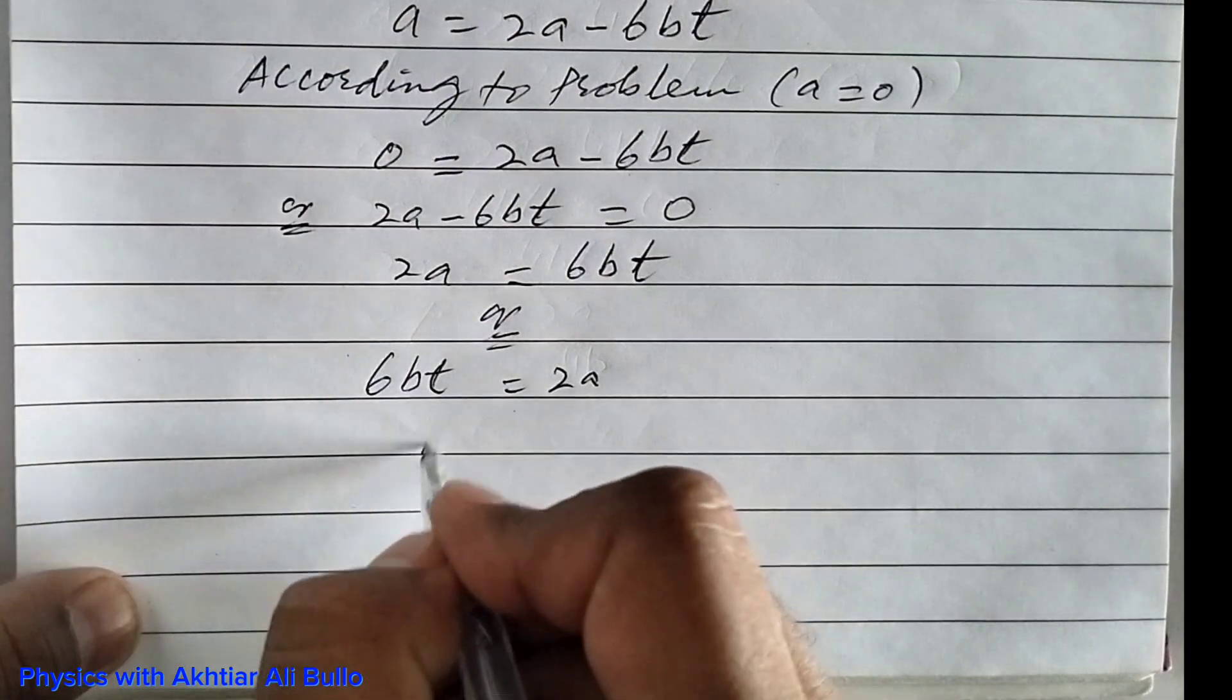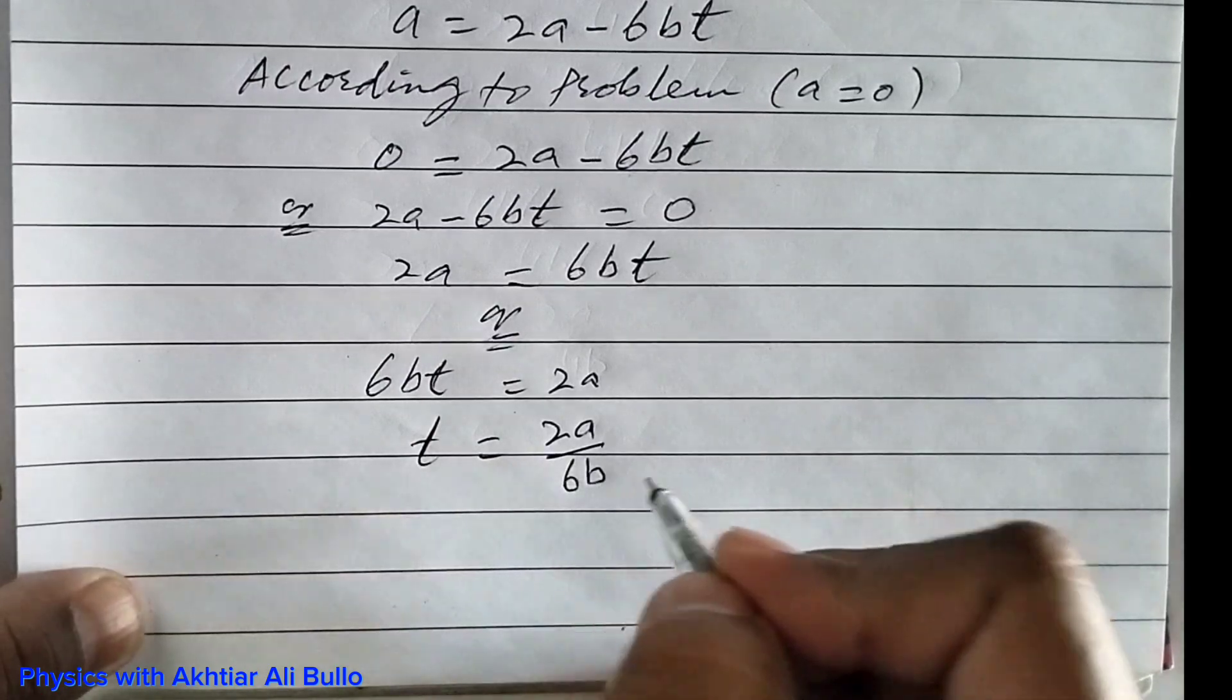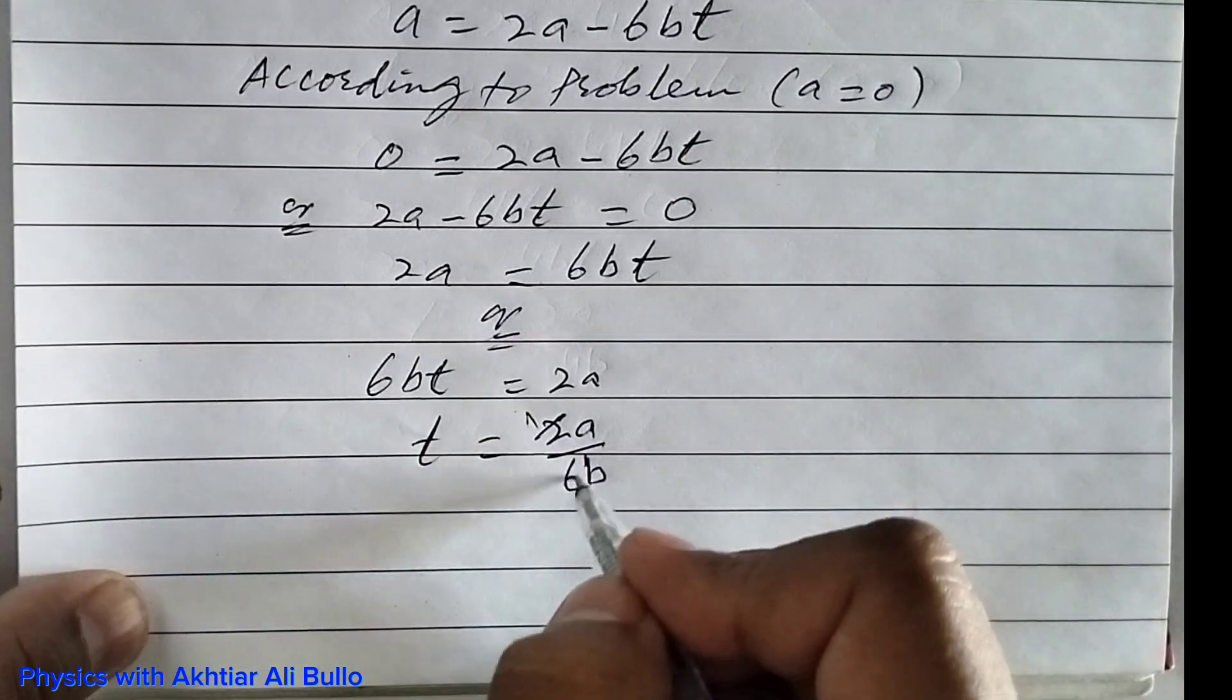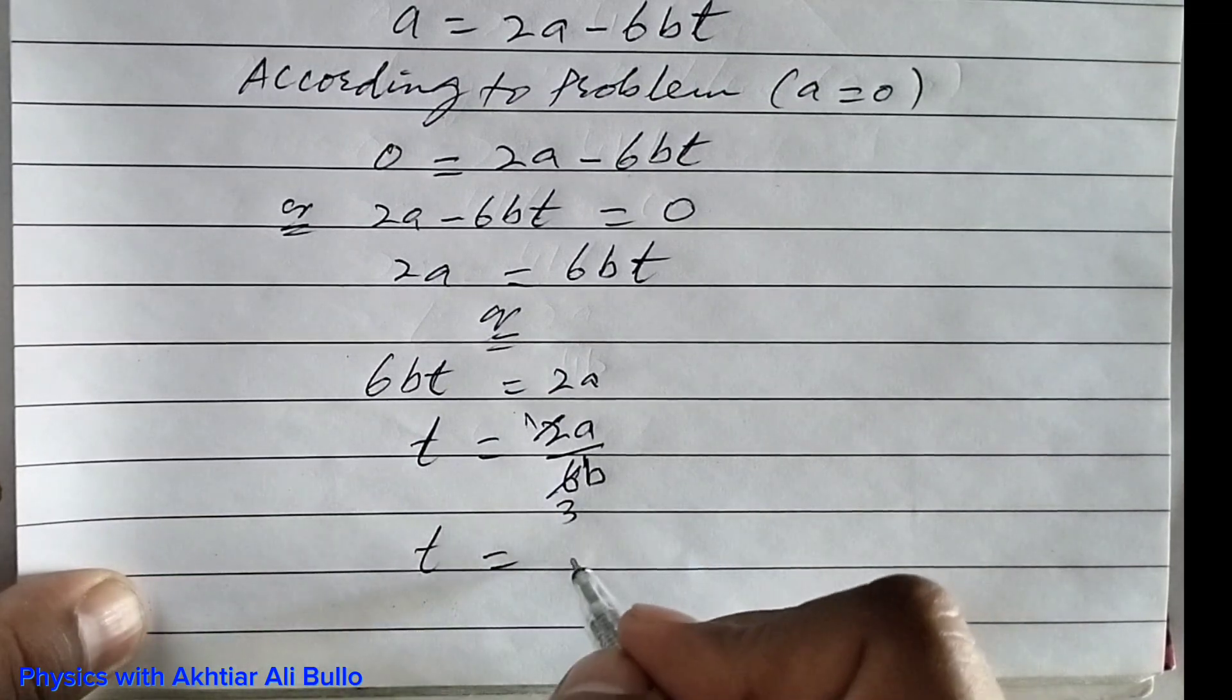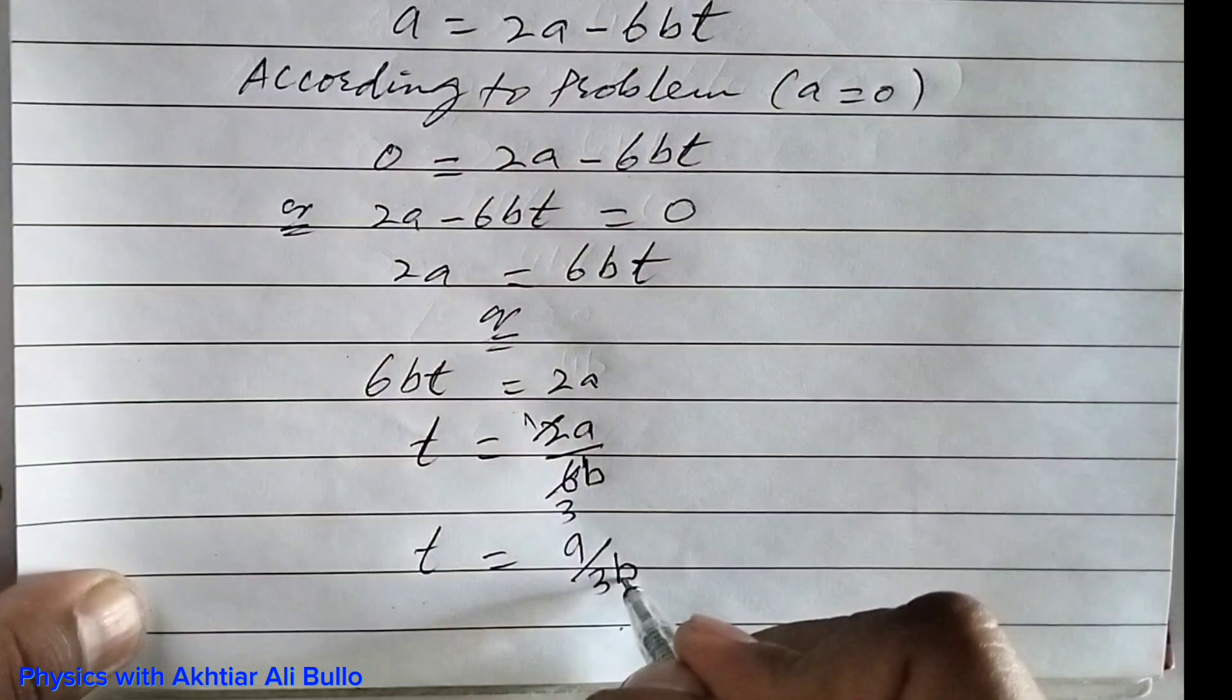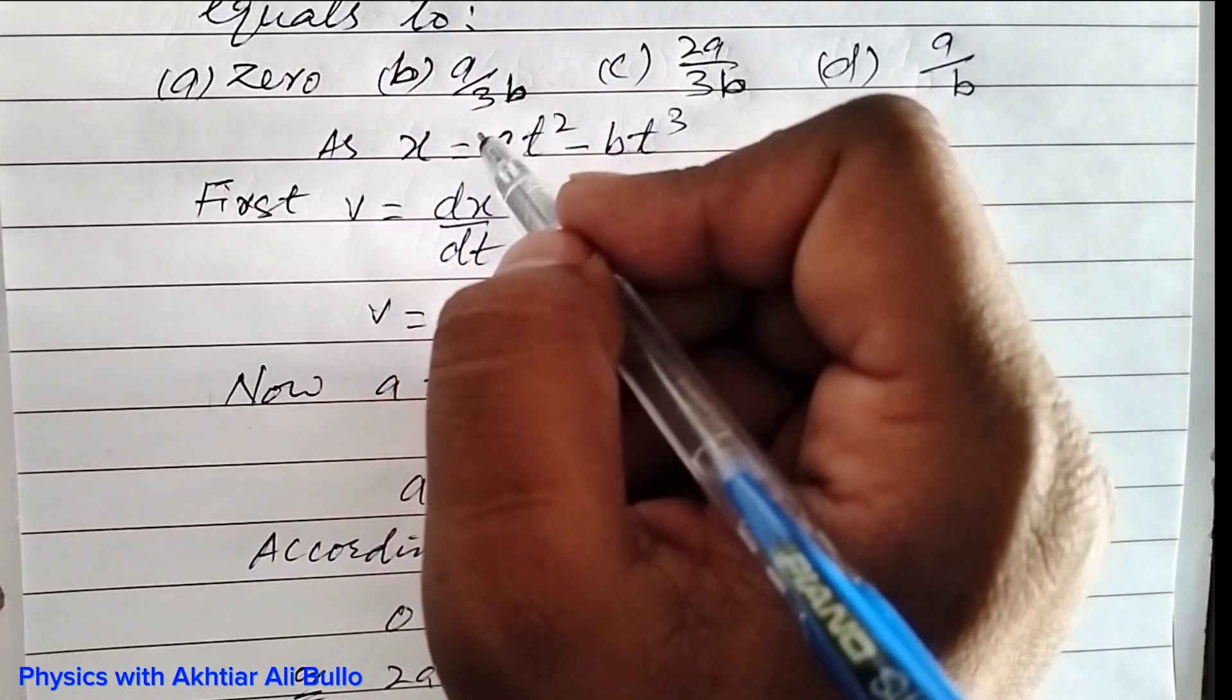So t = 2a/6b. Simplifying by dividing both numerator and denominator by 2, t = a/3b. Thank you.